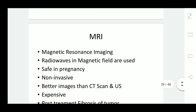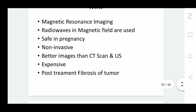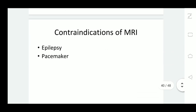The next technique is MRI, or magnetic resonance imaging, which uses radio waves in a magnetic field. It is safe in pregnancy and non-invasive, and its images are better than CT scan and ultrasound. However, it is expensive. MRI is also used to assess fibrosis after treatment of malignancies. Contraindications include epilepsy, presence of a pacemaker, and cochlear implant.